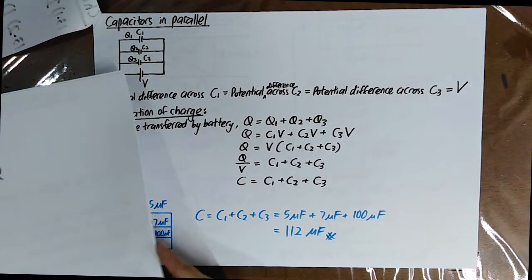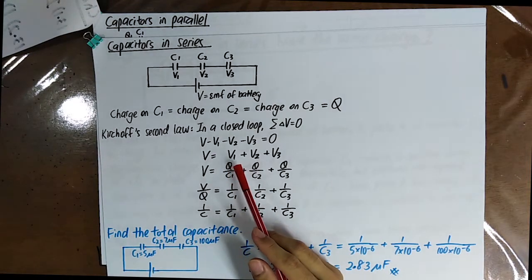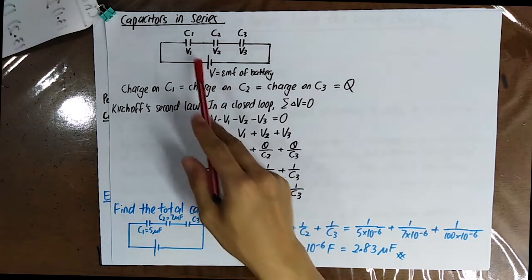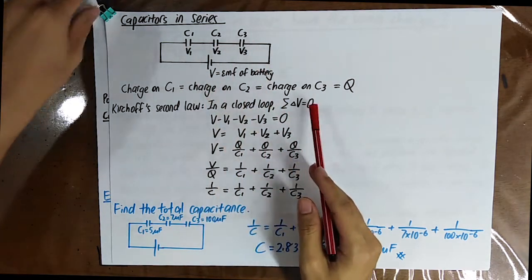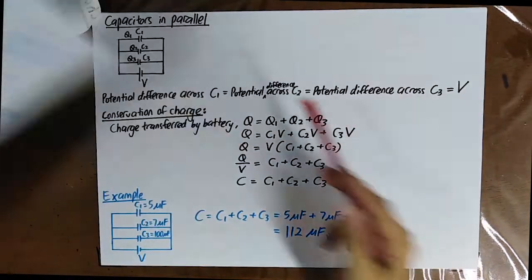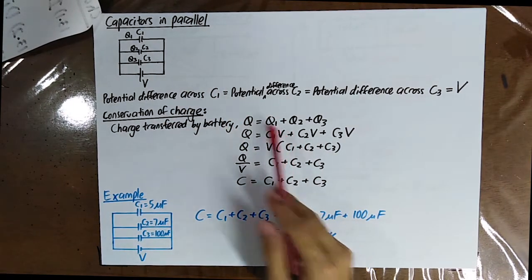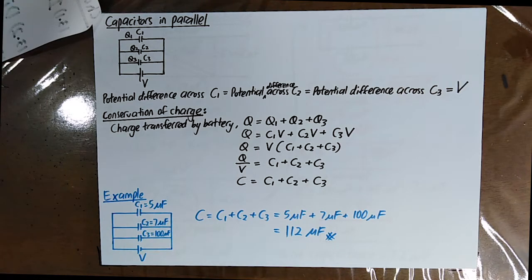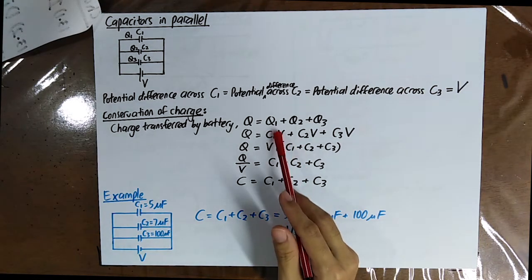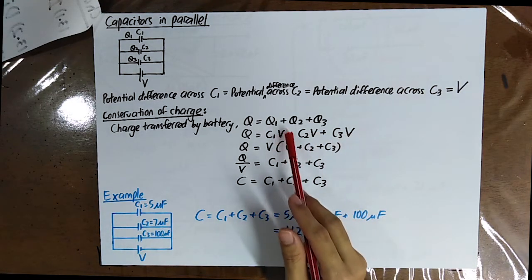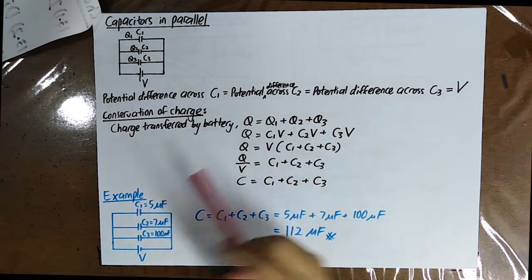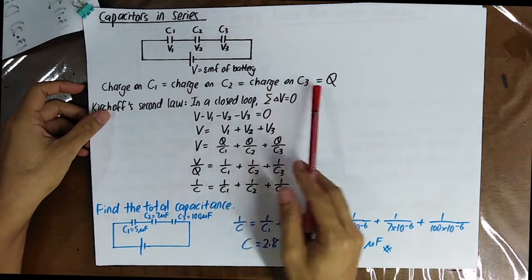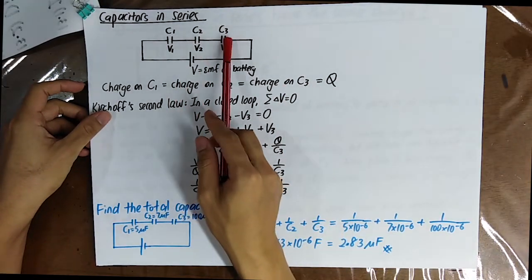Recall that for capacitors in series, the charge Q on each capacitor is the same. Now for capacitors in parallel, the voltage V across each capacitor is the same. Therefore you don't denote V1, V2, or V3 because V1 equals V2 equals V3 equals V. Similarly, for capacitors in series, Q1 equals Q2 equals Q3 equals Q.